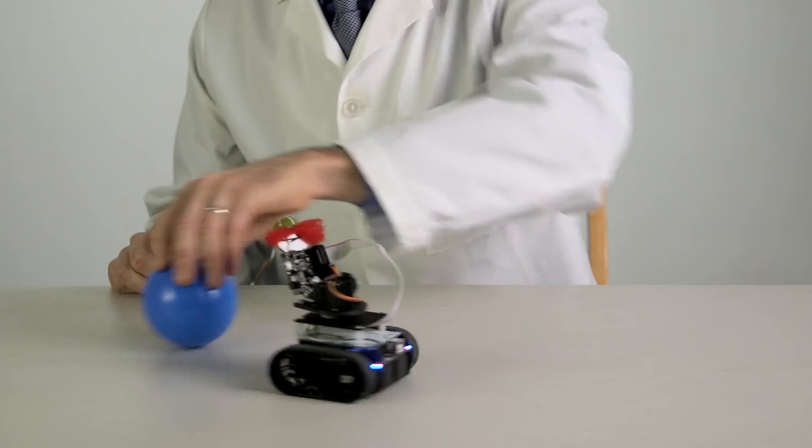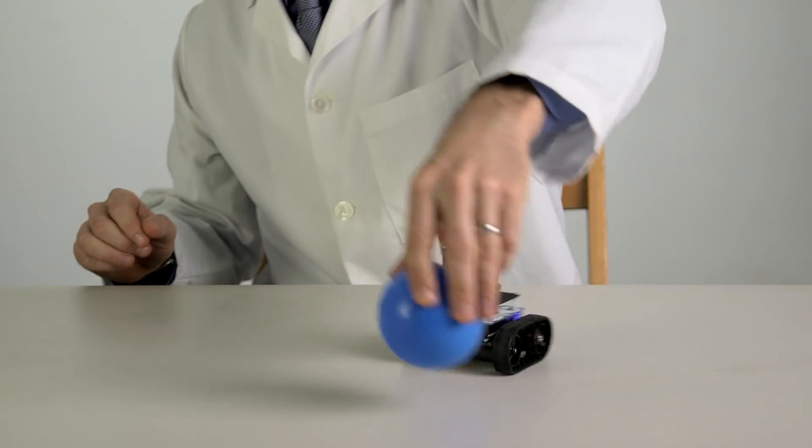Pixie 2 has a custom pan-tilt mechanism, so it can look around while it does things.